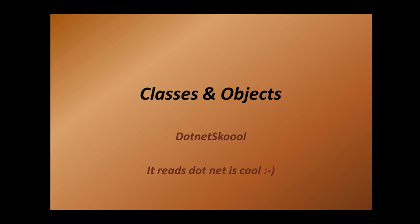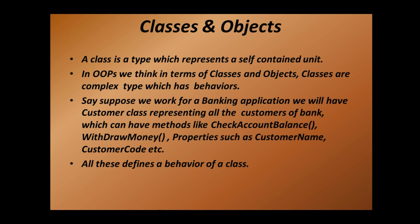This is the base of all programming in C#. Let's go through the slides first. A class is a type which represents a self-contained unit in object-oriented programming — we think in terms of classes and objects. Classes are complex types which have behaviors. Say suppose we are working for a banking application, we will have a customer class representing all the customers of the bank.